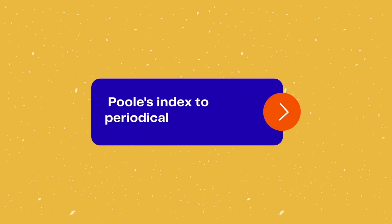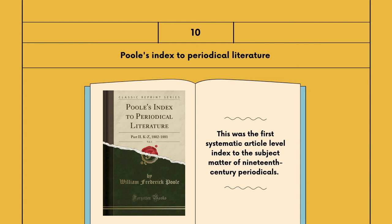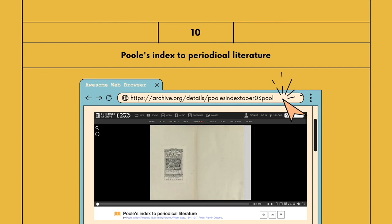Poole's Index to Periodical Literature was the first systematic article-level index to the subject matter of 19th century periodicals. The first edition was published in six volumes between 1882 and 1908. The index began in 1848 as the project of Yale student William Frederick Poole. By the time the final volume was released in 1908, the index had covered 482,000 articles and 378,000 subjects. This index can be viewed at archive.org.